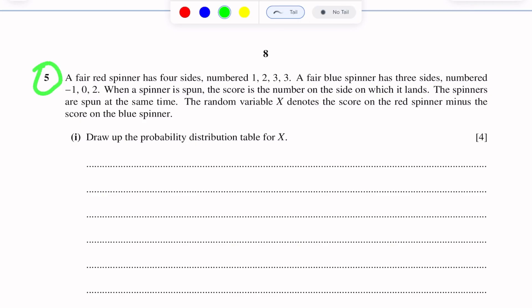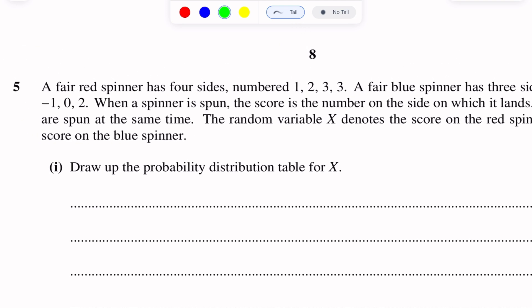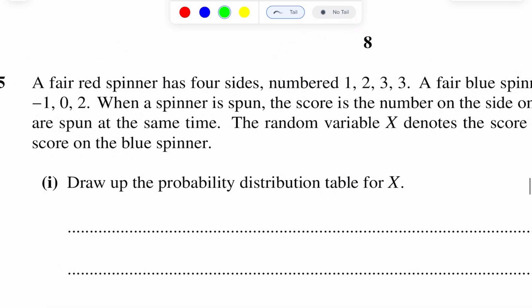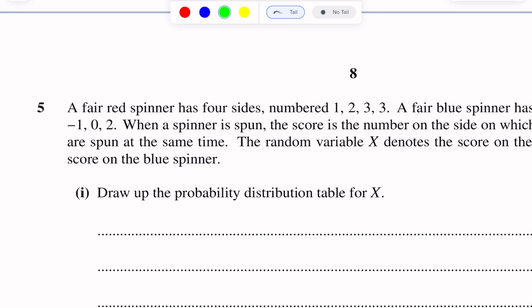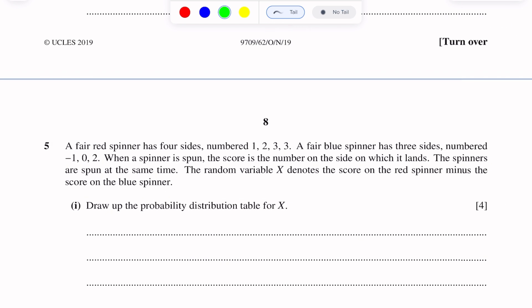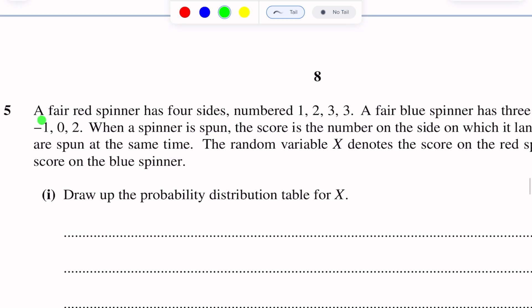Question number 5. This question is of discrete random variable. A fair red spinner has 4 sides numbered 1, 2, 3, 3.